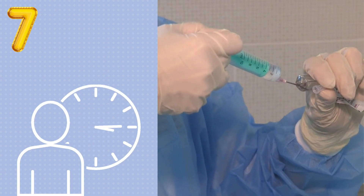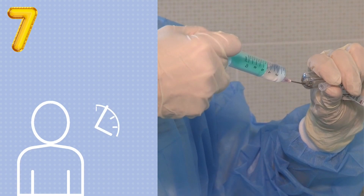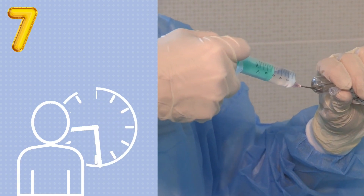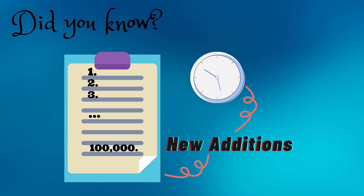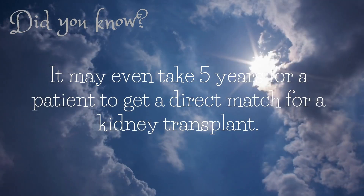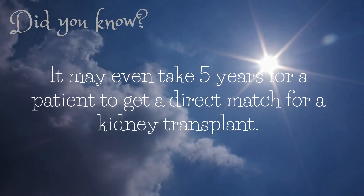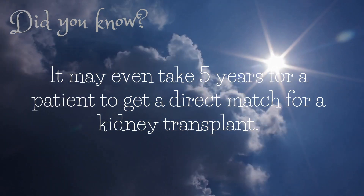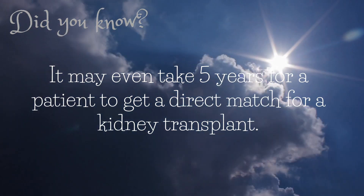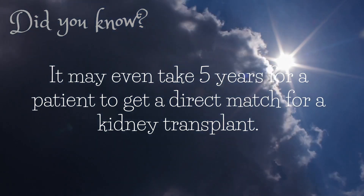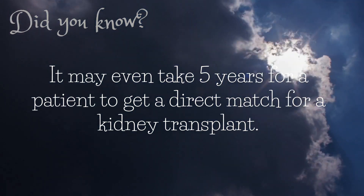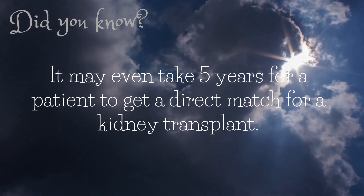Seventh, therapeutic cloning may shorten the treatment time. Every day a wait for an organ transplant leads to the death of about 20 people. On average, a new patient is added to the organ transplant list in the USA every 10 minutes, and sometimes it may even take five years before a patient gets a direct match for a kidney transplant. With the help of therapeutic cloning, people would not have to wait this long.